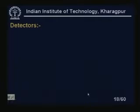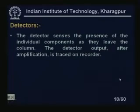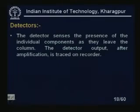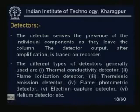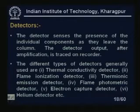Detectors sense the presence of individual components as they leave the column. The detector output after amplification is recorded. The different types of detectors generally used are: thermal conductivity detectors, flame ionization detectors, thermionic emission detectors, flame photometric detectors, electron capture detectors, and helium detectors. Detectors are operated in two ways — responding either to the concentration of the solute or the mass flow rate. Those responding to concentration yield a signal proportional to solute concentration traversing the detector, producing an elution peak when plotted against time.